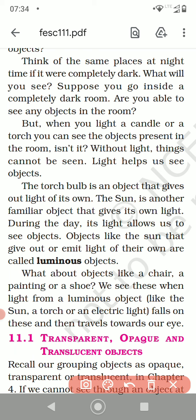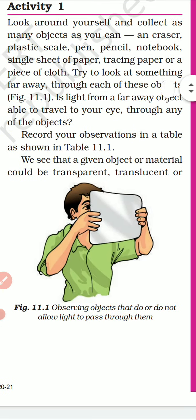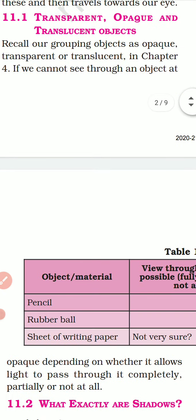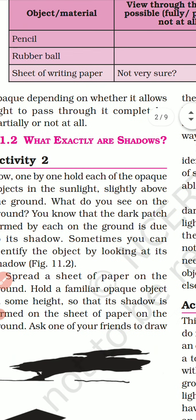We can also see here the terms transparent, opaque, and translucent. Since we have studied these in the last chapter, we are skipping that topic. Activity one is completely based on transparent, translucent, and opaque. Transparent means light passes through and you can see the object completely. Translucent means light passes partially, and in opaque, light doesn't pass at all.